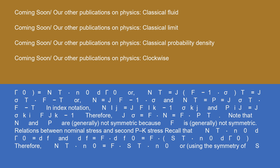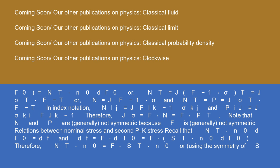Relations between nominal stress and second Piola-Kirchhoff stress: recall that N-transpose N-zero d-gamma-zero equals dF and dF equals F dF-zero equals F S-transpose N-zero d-gamma-zero. Therefore, N-transpose N-zero equals F S-transpose N-zero, or using the symmetry of S: N equals S F-transpose and P equals F S. In index notation: N-ij equals S-ik F-jk-transpose and P-ij equals F-ik S-kj. Alternatively, S equals N F-minus-transpose and S equals F-inverse P.